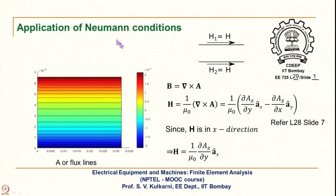Let us first see the application of Neumann conditions. We take a case of a conducting material plate which is excited on its both surfaces by the same magnetic field intensity H. This configuration is quite common — for example, any conducting plate in a rotating machine or a transformer, such as a core lamination or a winding conductor excited on both sides by the same value of H. Here B equals del cross A, and H equals 1 over mu_0 times del cross A, noting that A will be only in the z direction because we are doing a 2D approximation.